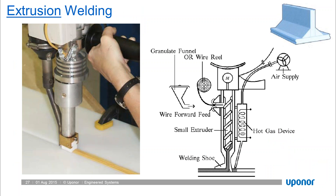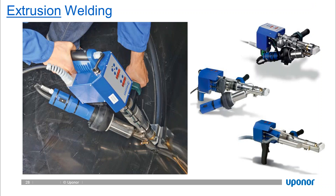Extrusion welding can use either a granulate funnel with polyethylene pellets or a wire reel, fed through an extrusion chamber that heats material into a molten mass, then applied to the weld with a welding shoe designed for the specific geometry of the weld. If we have a perpendicular weld, a chamfer, or a butt-end connection, we have a specific weld geometry based on standards. Similar to fusion welding, heated air also heats base materials A and B prior to weld application to ensure we arrive at the prescribed temperature for a homogeneous bond.